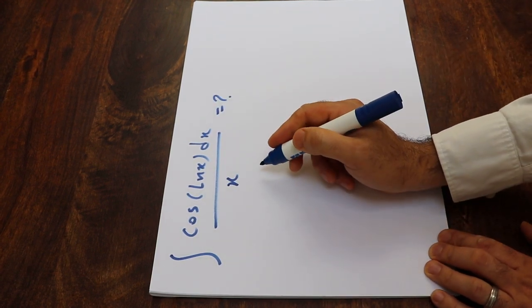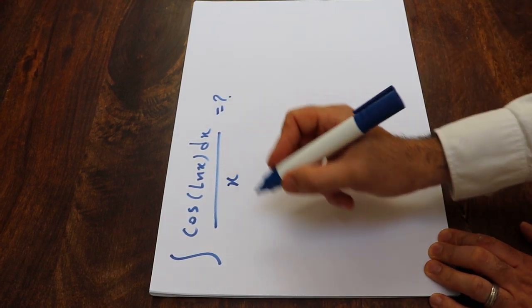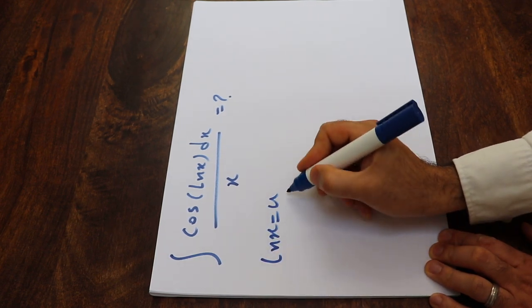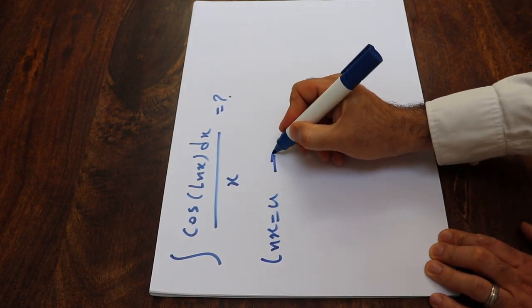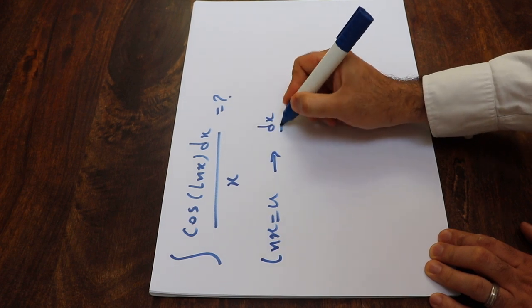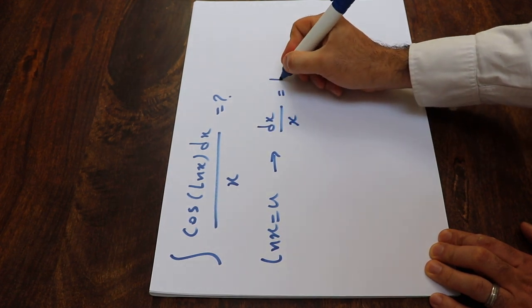This integral can be solved using the substitution rule. If you define ln(x) as u, and take the derivative from each side of the equation, you will get dx divided by x equal to du.